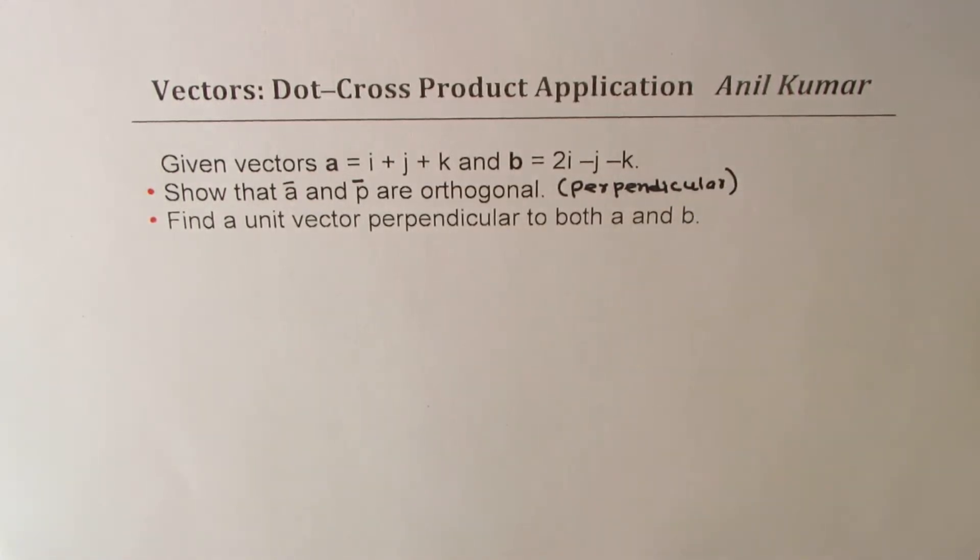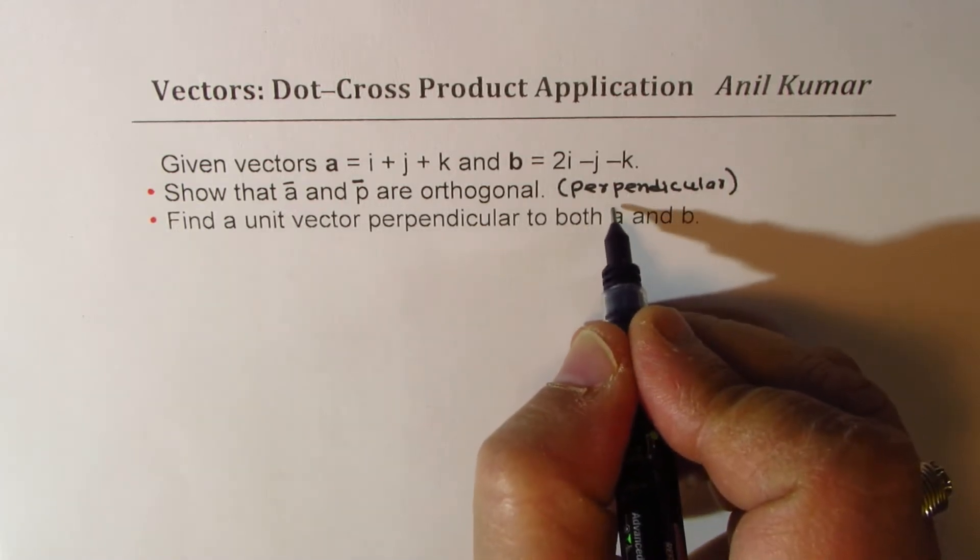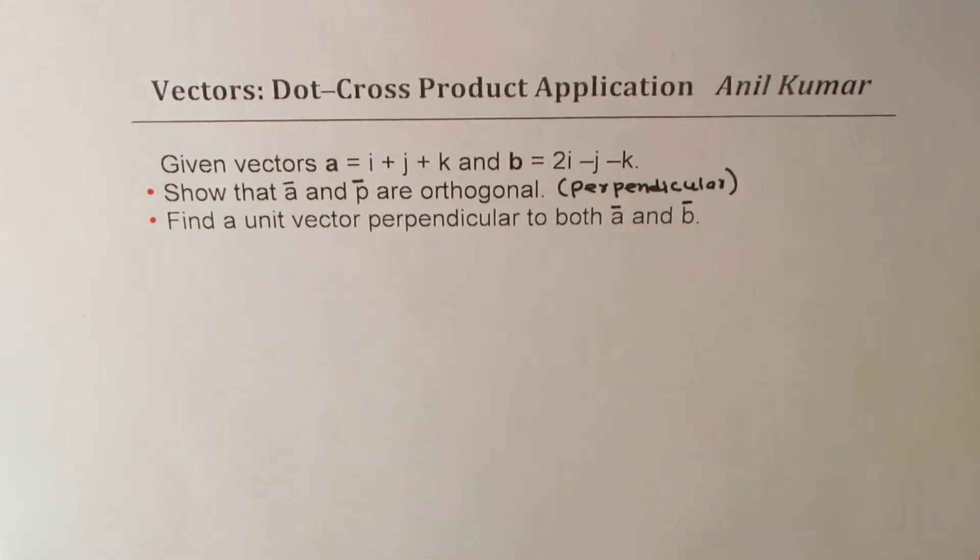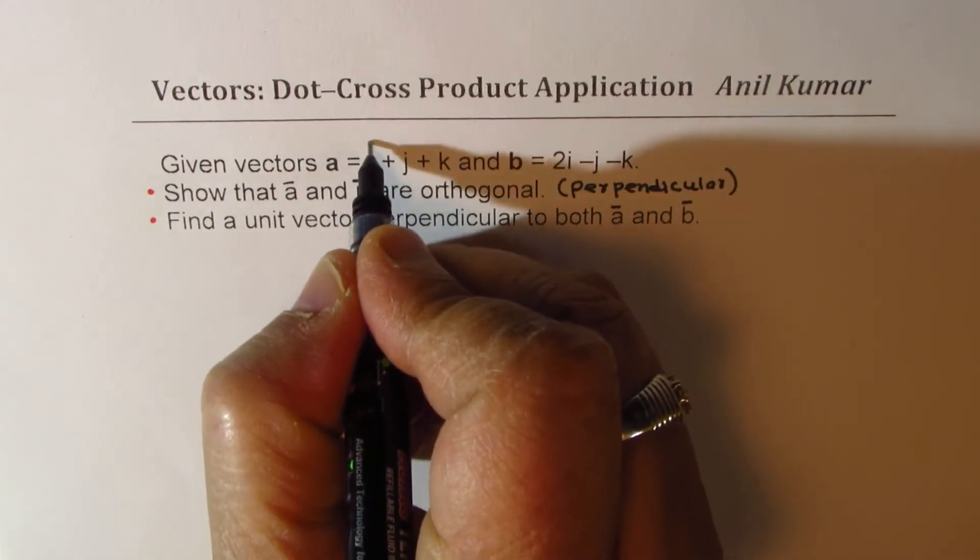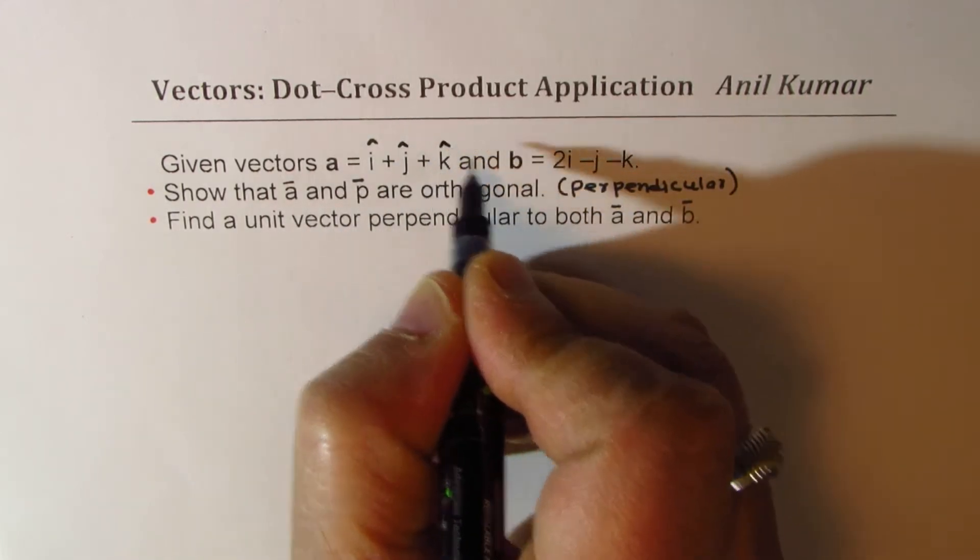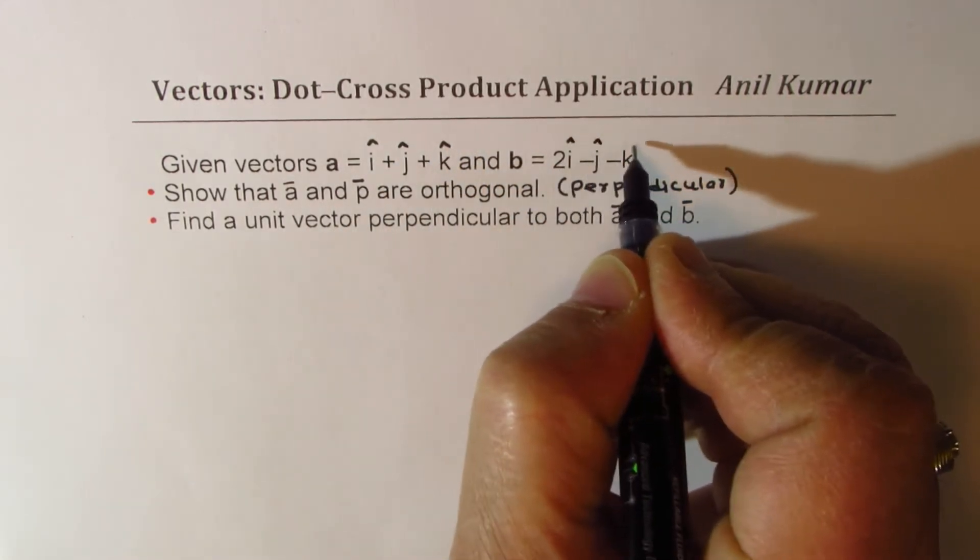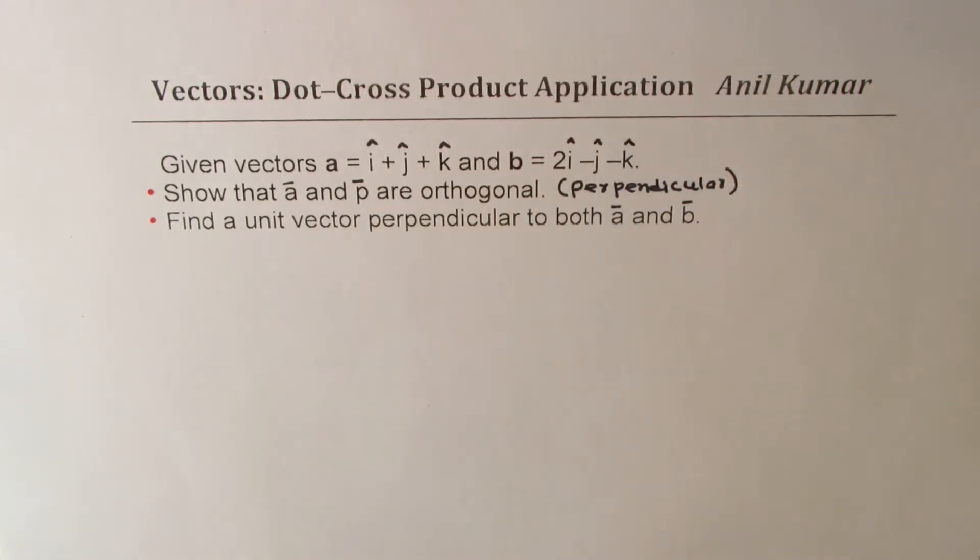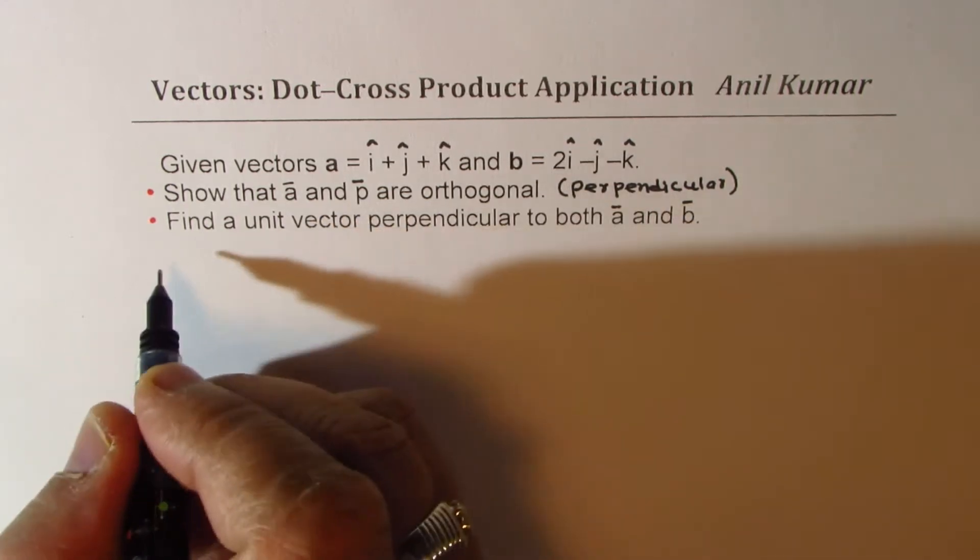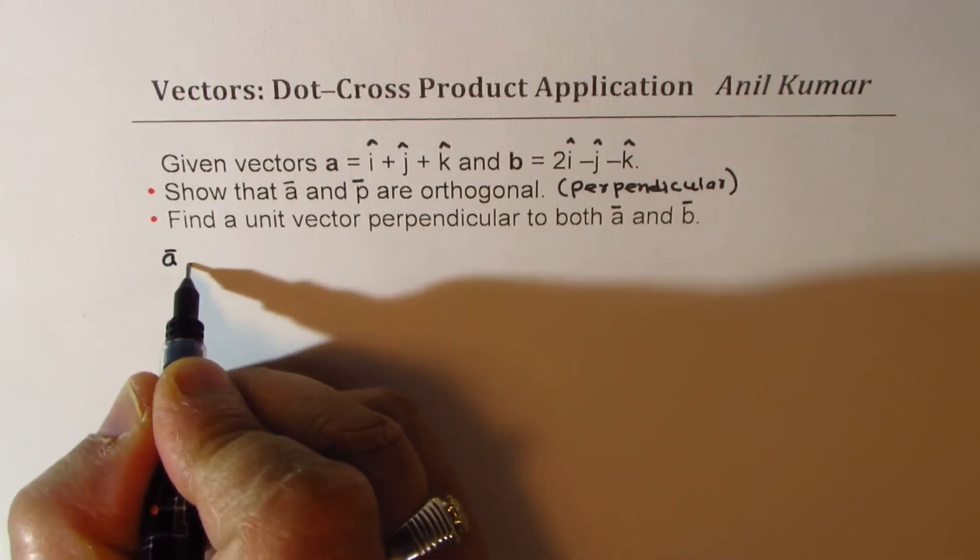And part b is find a unit vector perpendicular to both a and b, where i, j, k are the unit vectors in the direction of x, y, and z. You can always pause the video, answer the question, and then look into my suggestions.